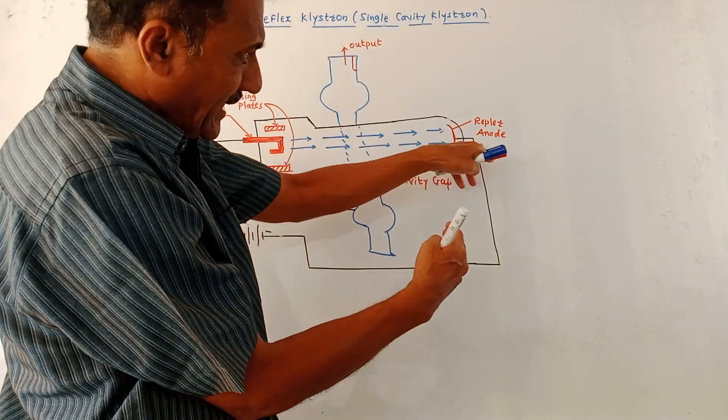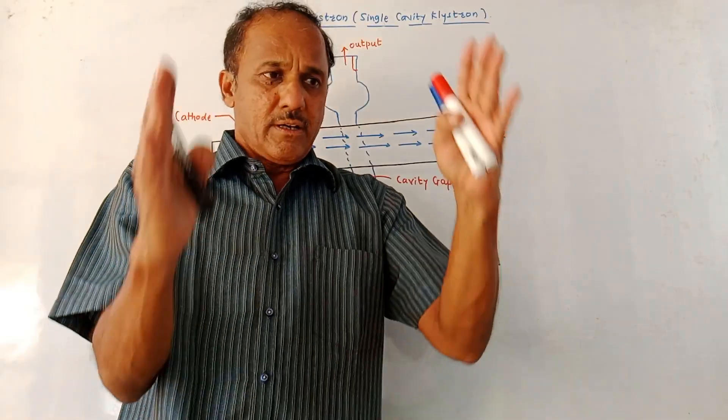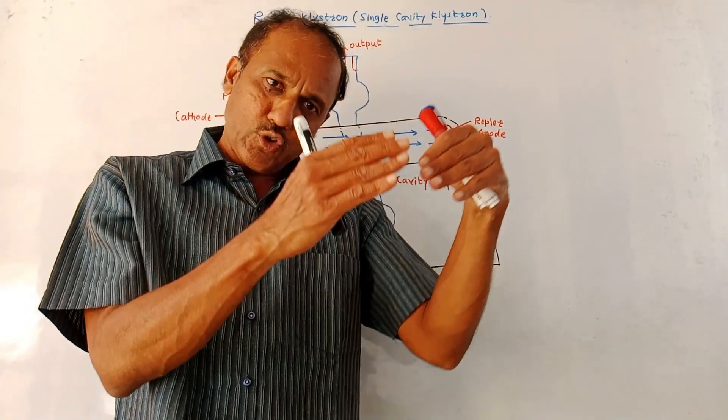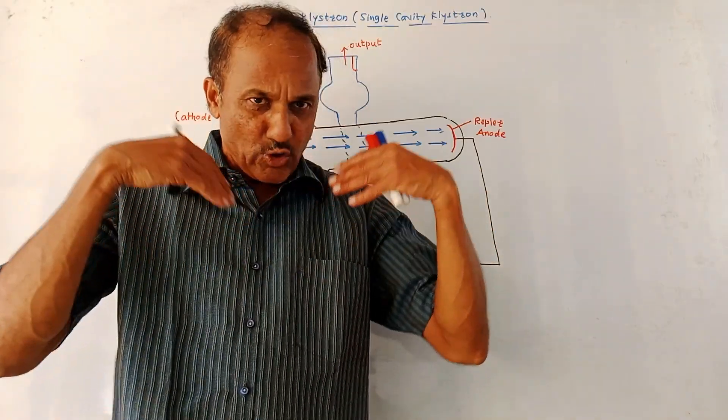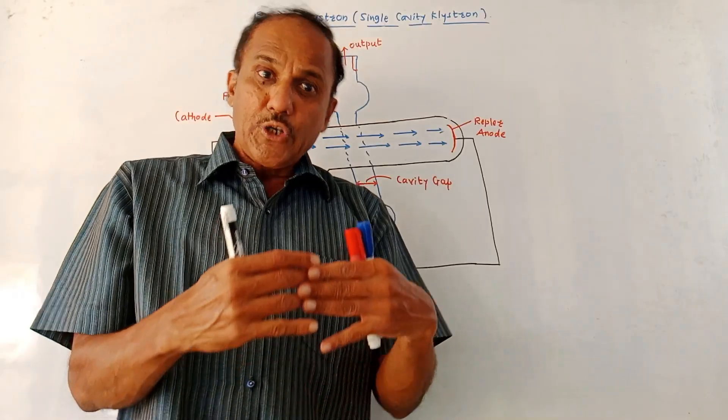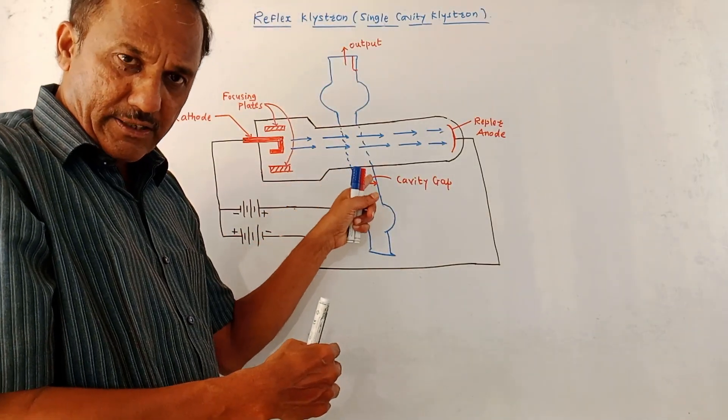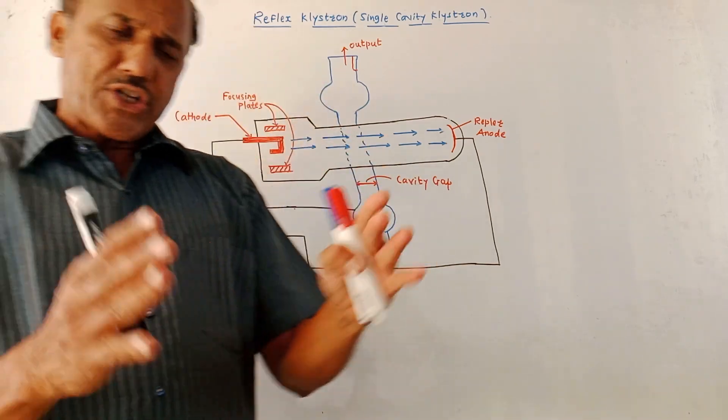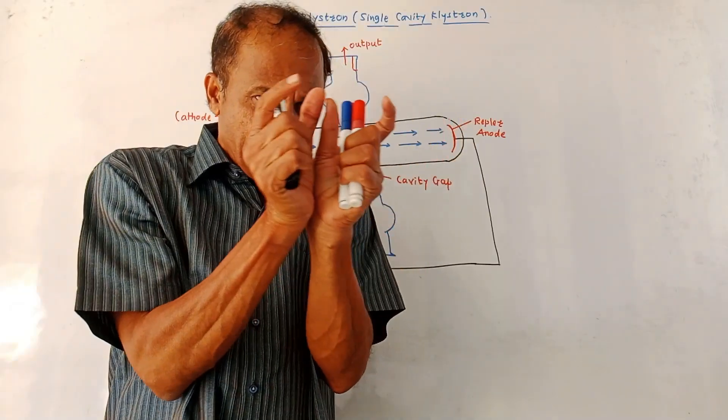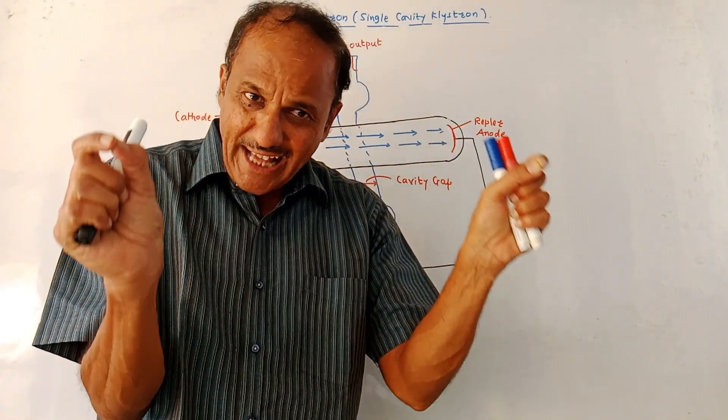Again, such electrons will get repelled back from the anode. The point is that some electrons are moving with more speed whereas some electrons are moving with less speed. Some electrons are accelerated while some are retarded due to the difference in voltage applied at the cavity. Because of this, like the two cavity klystron, different bunches are created due to the difference in speed of moving electrons.